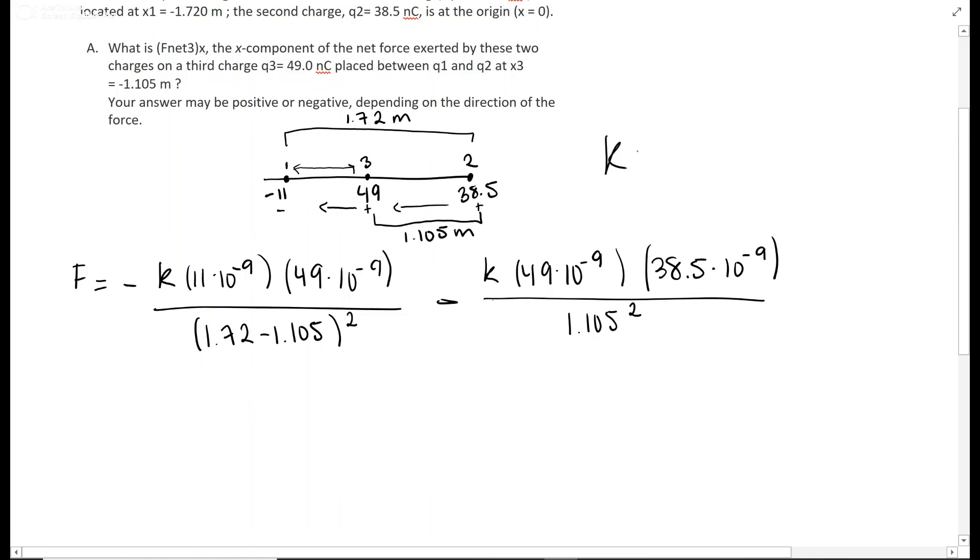And basically you just have to go ahead and type this in, remembering that k equals 9 times 10 to the 9th, and you should get a value of about negative 2.67 times 10 to the negative 5th Newtons. Remember that is negative because it is pointing to the left.